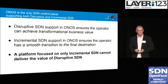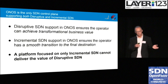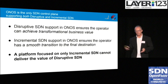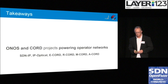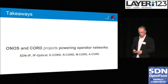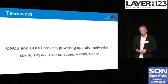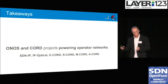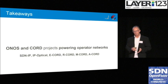Disruptive SDN support ensures the operator achieves the transformational business value they want to. But the incremental SDN support in ONOS ensures they have a smooth transition to move there. Most importantly, a platform that's only focused on incremental SDN can't deliver the value of disruptive SDN — it won't get there. Let's talk about some of the use cases for ONOS and CORD. There's SDN IP, a lot around IP optical, and then the different versions of CORD: E-CORD applied to enterprise, R-CORD to residential, M-CORD to mobile, and A-CORD is about analytics.